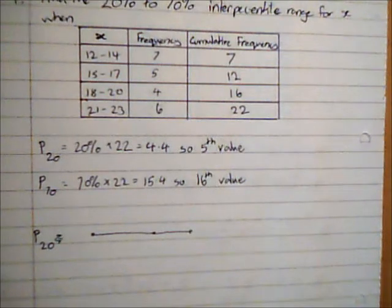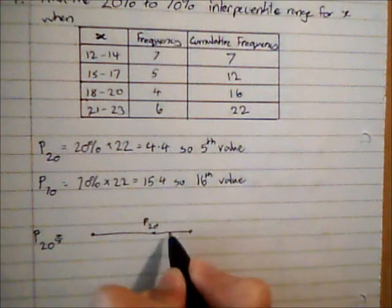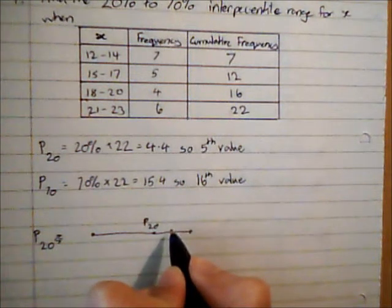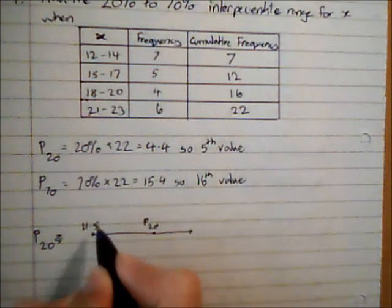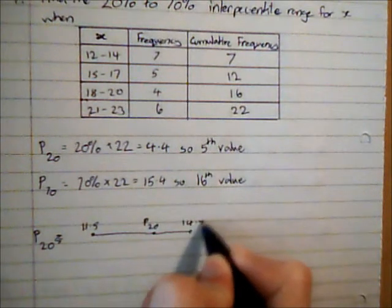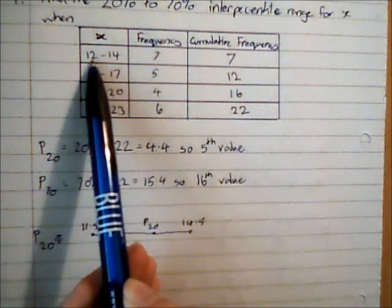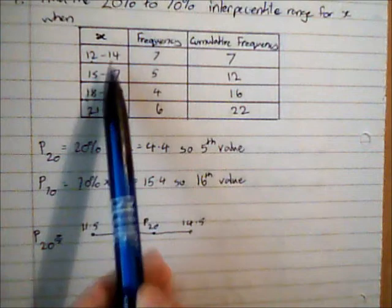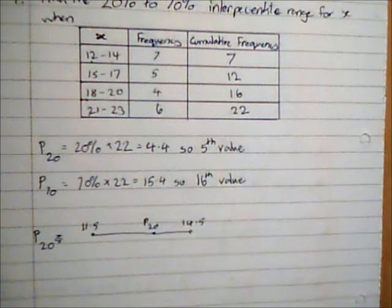So what I am going to do is along the top, I am going to show the location of P20. So P20, which we know is the 5th value, is going to be somewhere in the first group. So that is going to be somewhere between 11.5 and 14.5. And we need to remember here that although this says 12 to 14, because the next group is 15 to 17, the actual midpoint is halfway between 14 and 15.